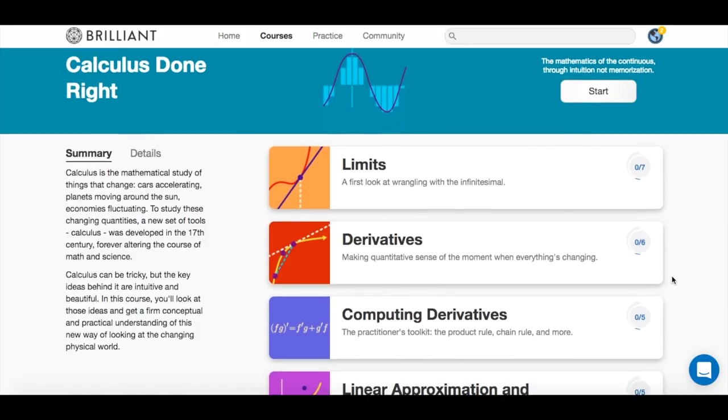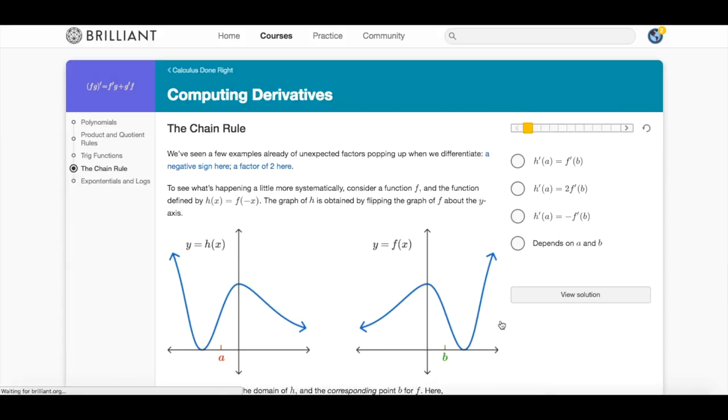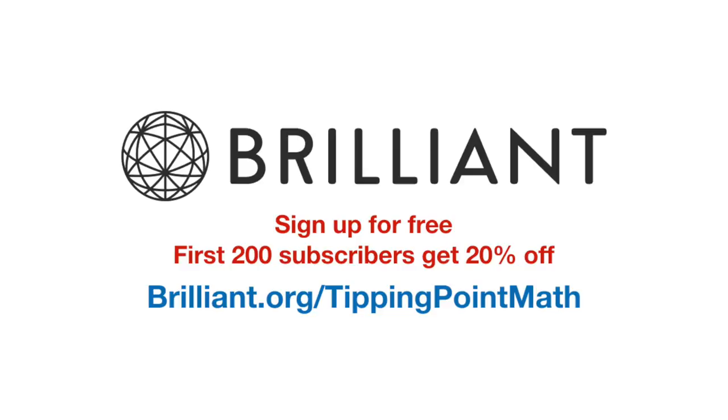Brilliant also offers courses like Calculus Done Right, which includes the chain rule. To learn more about Brilliant, go to Brilliant.org slash Tipping Point Math and sign up for free.